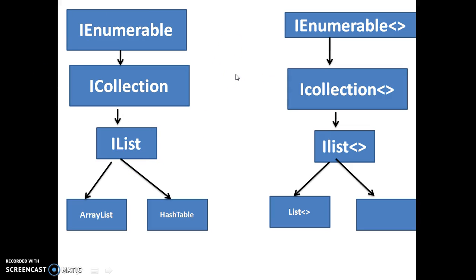Here I think we already know the concept of collections. Collections are generally used to implement data structures in .NET. What is the difference between collections and generics? If you want to perform operations on a group of objects of different types, then go for collections. If you want to perform operations on a group of objects of the same type, go for generics. Generics are also called general data types. Every collection is a predefined class like ArrayList, HashTable — these are all predefined classes implementing the IEnumerable interface.